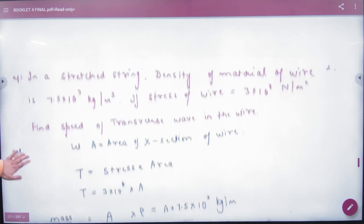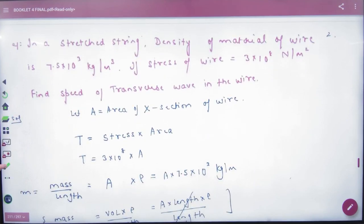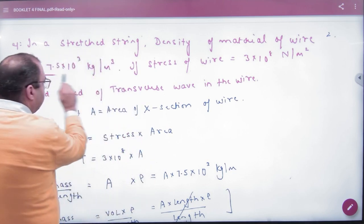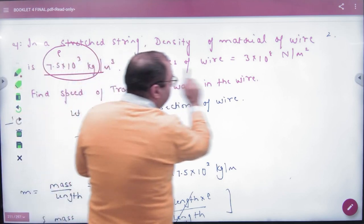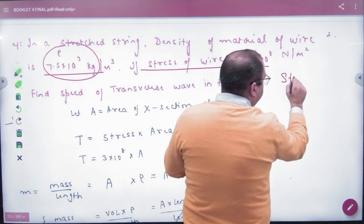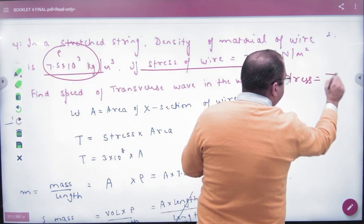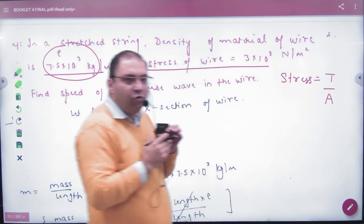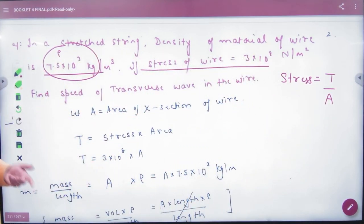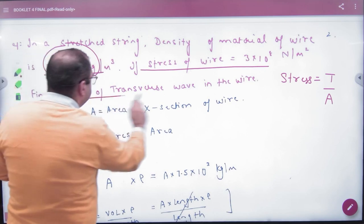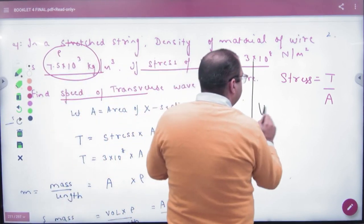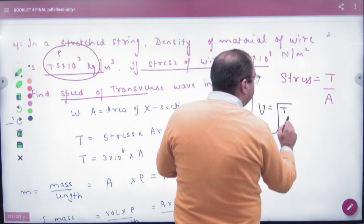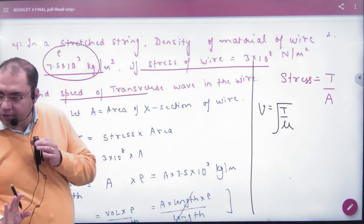Jaise ek stretch string hai. Kinch ki rassi hai, density of the material given hai, to rho to mujhe given hai. Stress of the wire given hai. Speed of the transverse wave nikaalenge. Formula mere paas hai: under root of T by mu. Yeh formula hai.